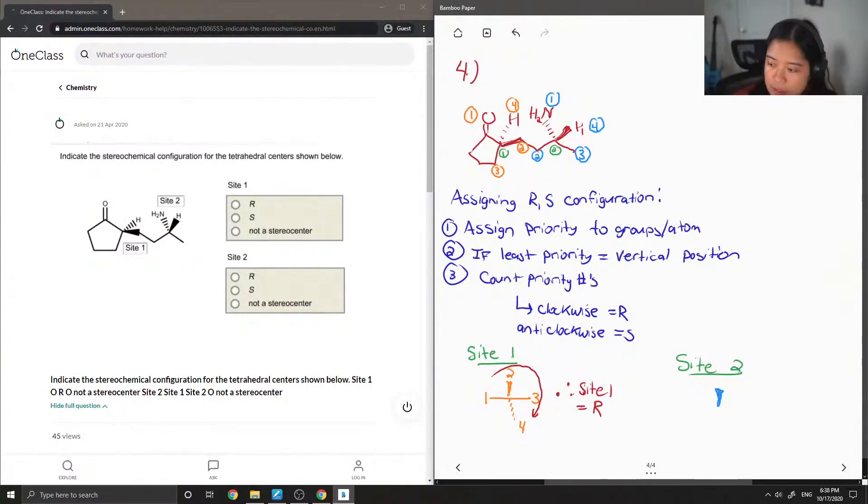So since the hydrogen is sticking up like that, I'm going to draw it up here instead. So this is four. So three is here this time. One is down there. And then two is there. And then if we were to number one, two, three, four, it also goes in a clockwise direction. So this is also R.